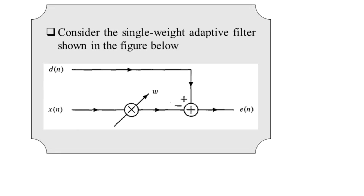We have been provided the single-weight adaptive filter schematic. On the left-hand side we have two input signals — discrete-time random sequences. x(n) is the practical signal carrying the desired information as well as noise or interference, whereas d(n) is the desired signal to be recovered at the receiver.